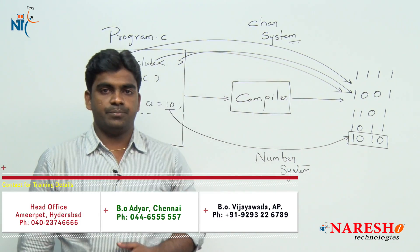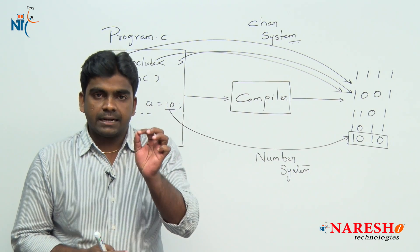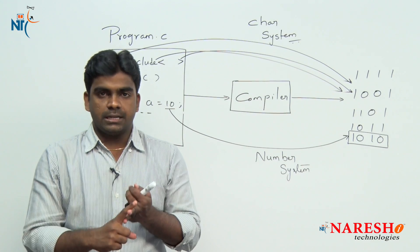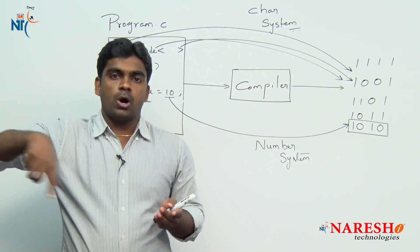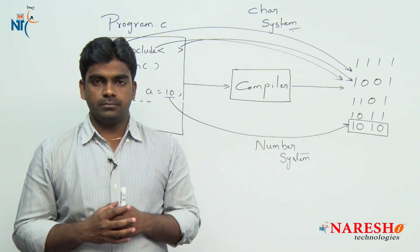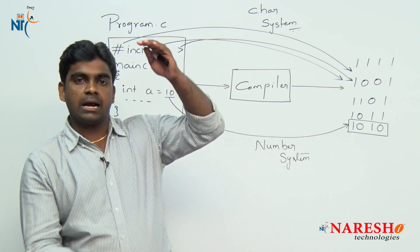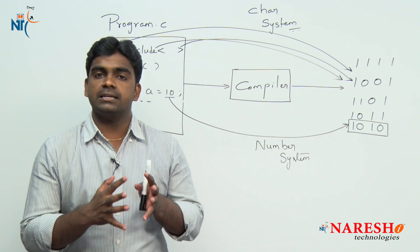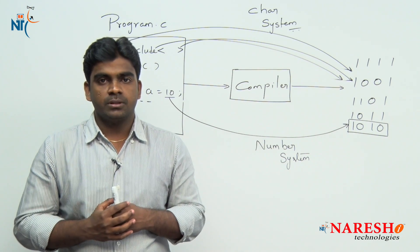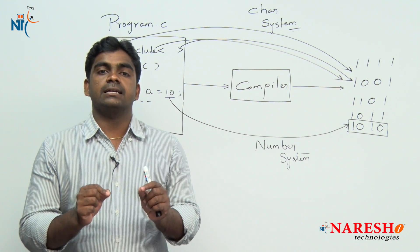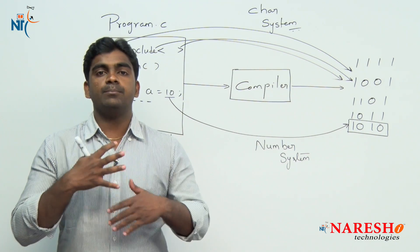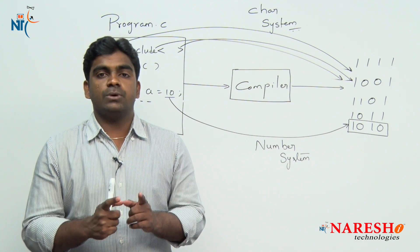To solve this, programming languages introduced the concept of a character system. Using a character system, you can represent one entire language - suppose English language with capital letters, small letters, digits, and special symbols - all characters represented using constant integer values. That is called a character system. Many character systems are available; the first computer introduced by IBM had its own character system. But the most famous one now is the ASCII character system, which every programming language follows.